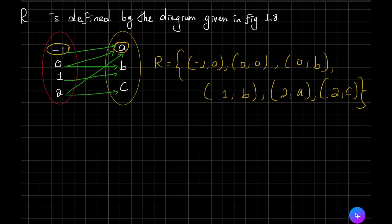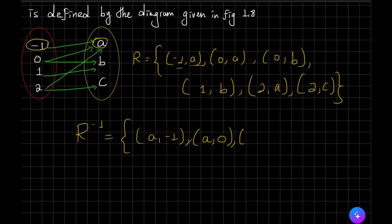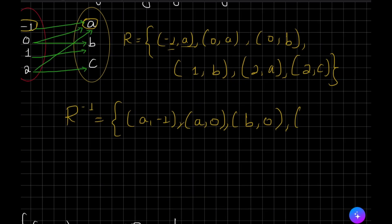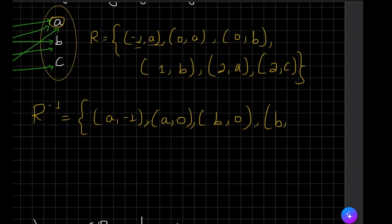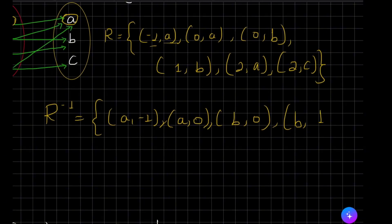For the inverse relation, we interchange the pairs. So the inverse relation contains: (a, -1), (a, 0), (b, 0), (b, 1), (a, 2), (c, 2). These are the pairs for the inverse of the relation.